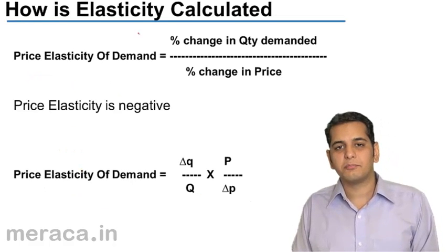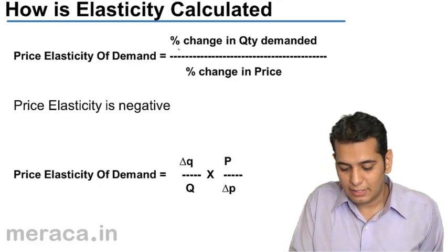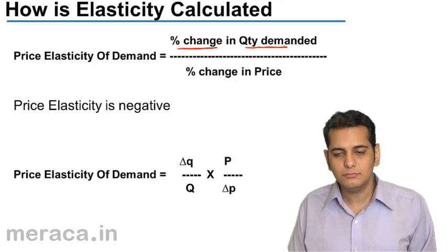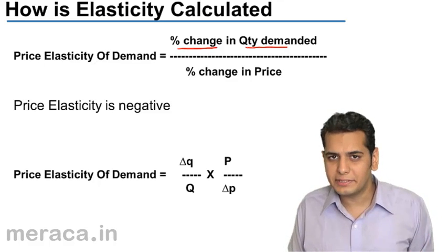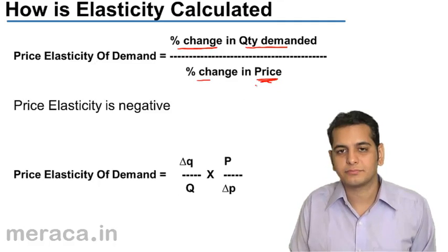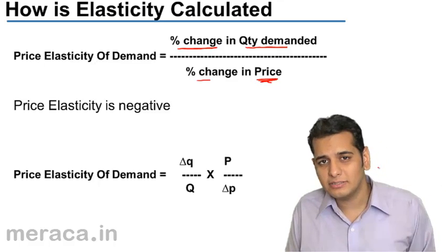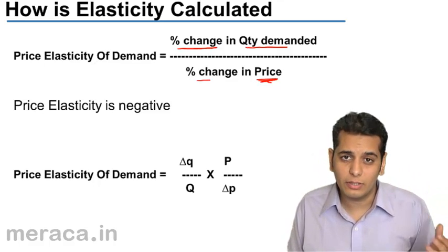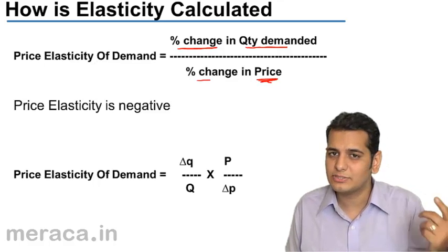Price elasticity of demand — how is it calculated? It is calculated as the percentage change in quantity demanded over the percentage change in price. That is, how much does the demand change for a certain percentage change in price, or in other words, one percentage change in price brings about how much percentage change in demand.